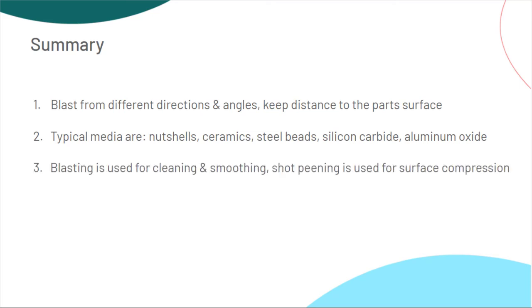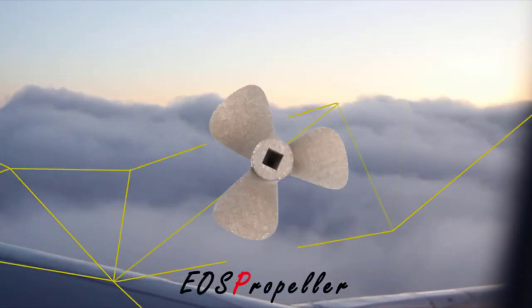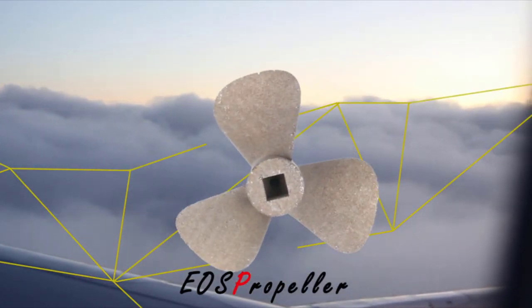Third, whereas blasting is mainly used for cleaning and smoothing, shot peening is used for compression. And finally, blasting can be used as an initial step to homogenize the surface of the part in order to reduce the differences in roughness between down skin and up skin. There are many more surface finishing methods — what do you want to learn about next?